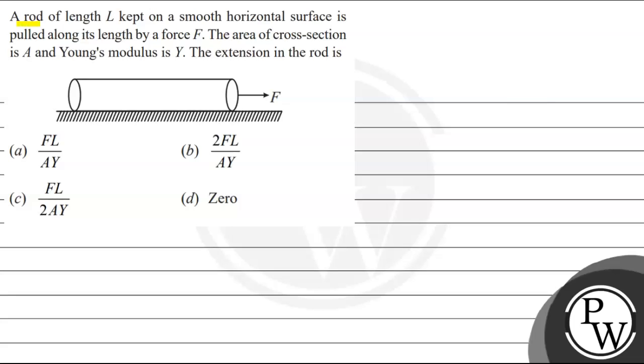Let's read this question. The question says that a rod of length L kept on a smooth horizontal surface is pulled along its length by a force F. The area of cross section is A and Young's modulus is Y. The extension in the rod is. Options are F L upon A Y, 2 F L upon A Y, F L upon 2 A Y, and Zero.